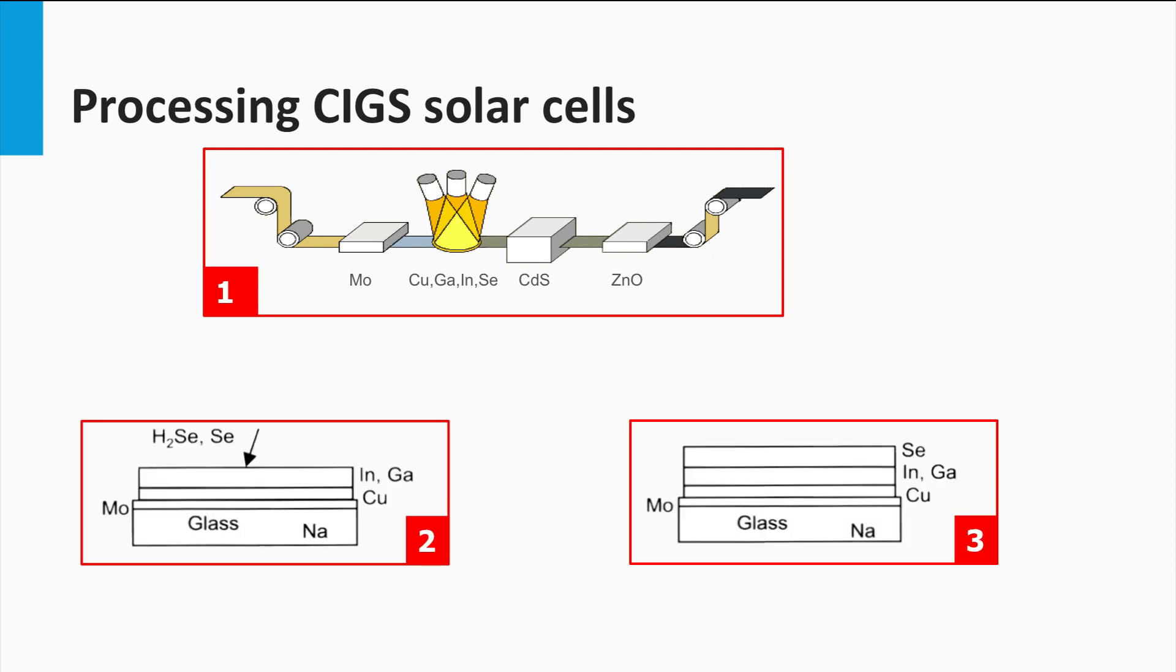Another option is to deposit a selenium-rich layer on top of the initial deposited alloy, and this is annealed. Because of the variety and complexity of the reactions taking place during such selenization co-evaporation process, the properties of CIGS are difficult to control.